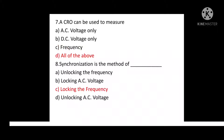Question No. 7: A CRO can be used to measure? Option A: AC voltage only. Option B: DC voltage only. Option C: Frequency. Option D: All of the above. Correct answer is Option D: All of the above.